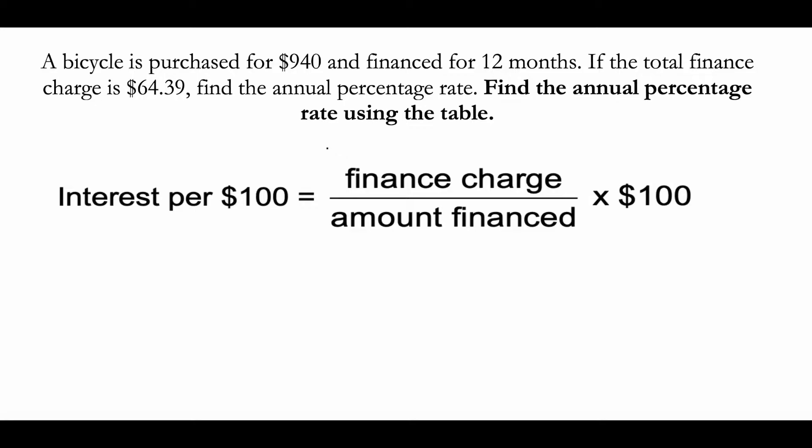If you're using the table, the formula to apply is interest per $100 equals finance charge divided by amount financed multiplied by 100.